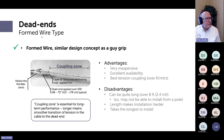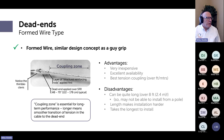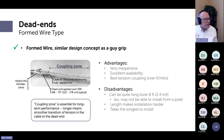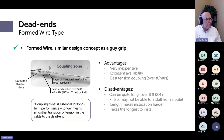First up: dead ends. There are two types. The first is the formed wire type — basically a guy grip. With ADSS, you first apply a layer of structural reinforcing rods, essentially armor rods, over the cable, and then the dead end body goes over that. A thimble keeps the eye of the dead end from collapsing when the cable is under tension.